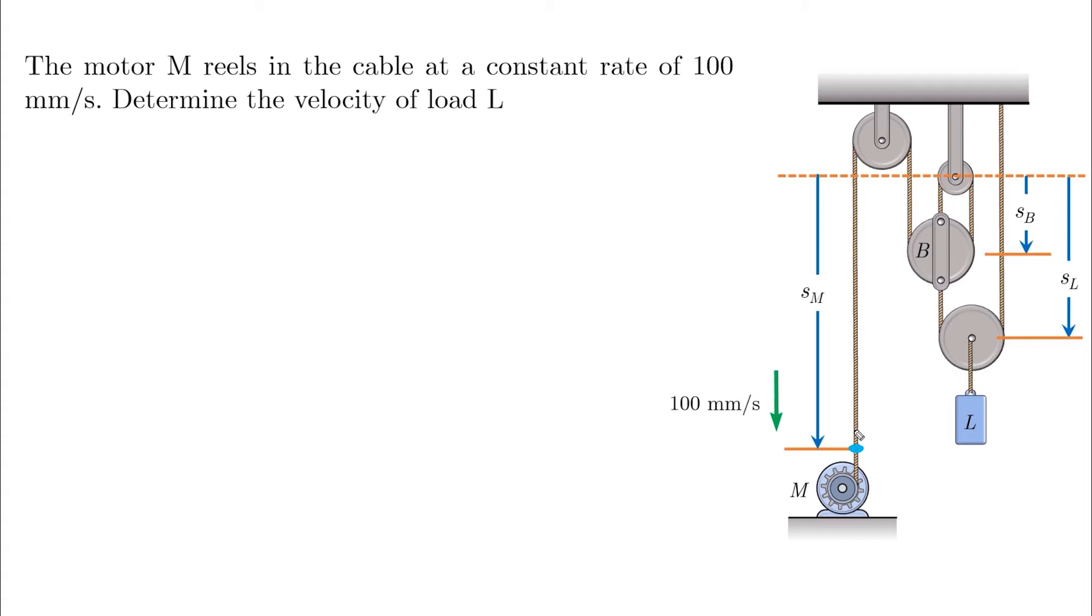For this left side, the length will be SM plus three segments attached to SB, which means 3SB, and this is equal to L1. And if we take the derivative, it will be VM plus 3VB equals to zero.